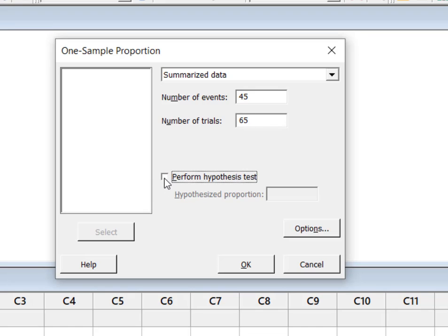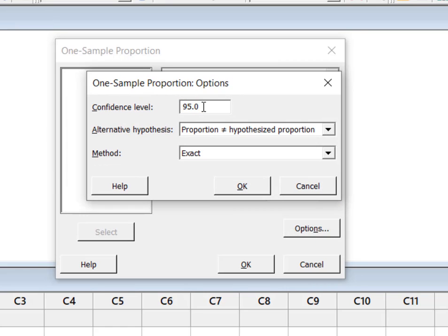We want to perform the hypothesis test, and the hypothesized proportion was 67%. In Options, we have our confidence level of 95%. We know that's 95% because alpha was 0.05. Confidence level plus alpha equals 1.